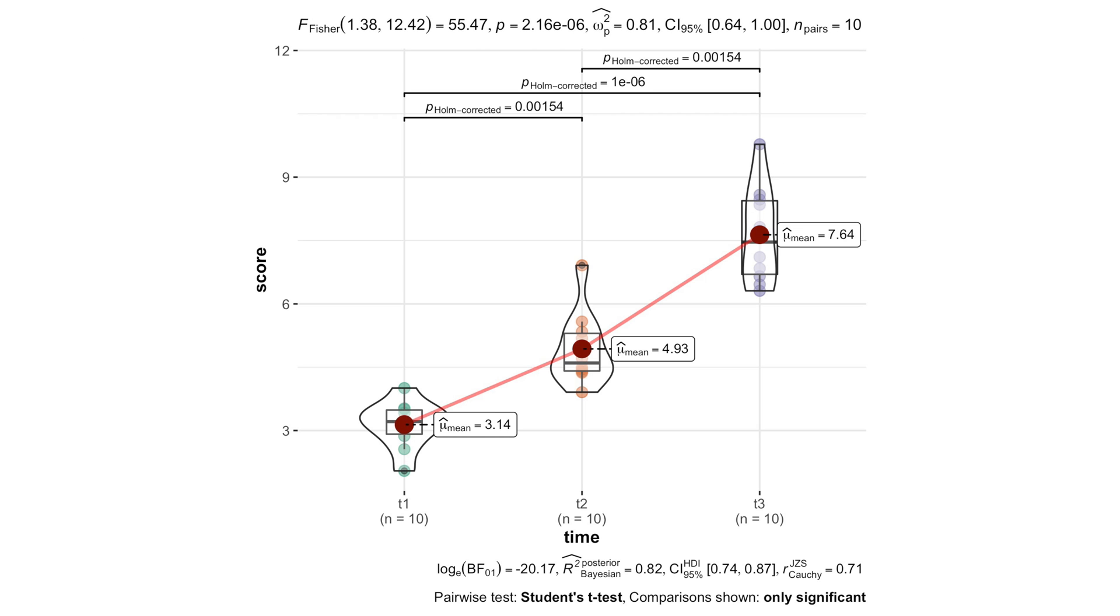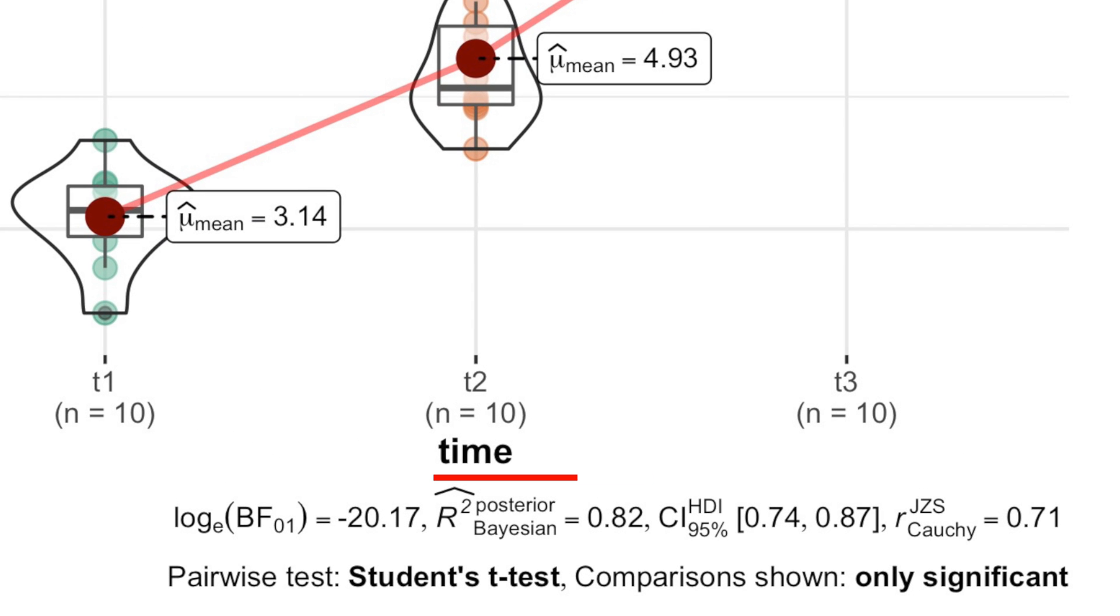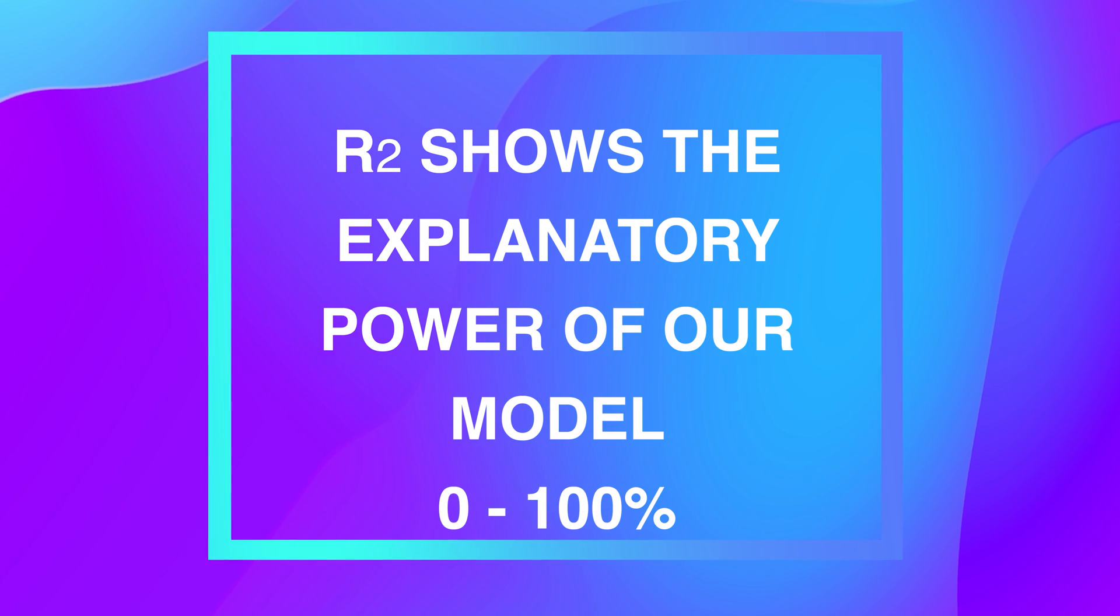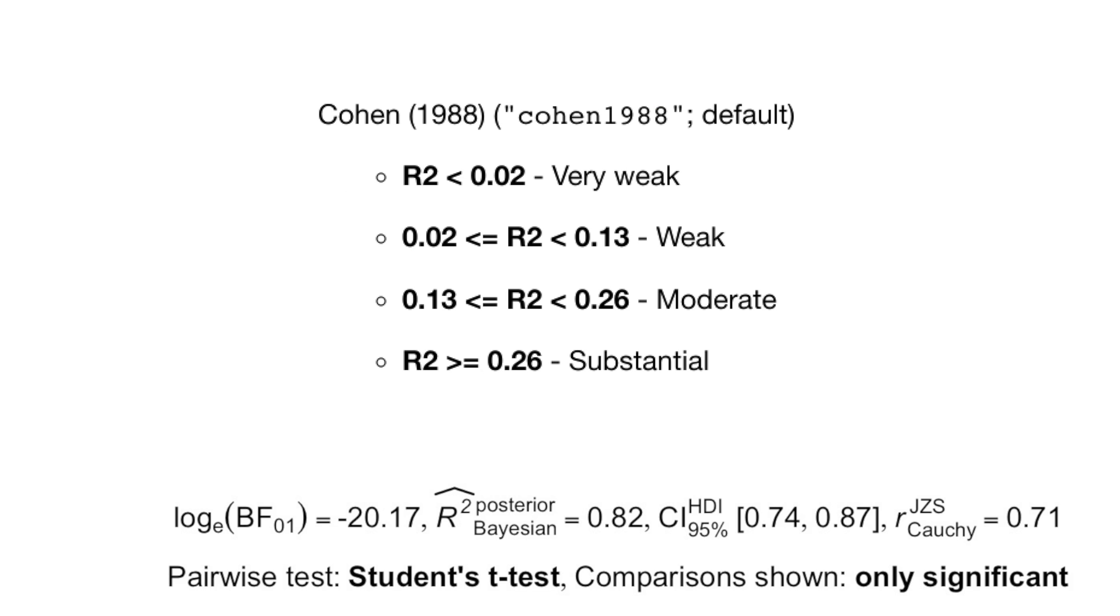Moreover, ggwithinstats also provides a Bayesian effect size, namely the coefficient of determination R-squared, with 95% highest density intervals. R-squared shows the explanatory power of our model, and since R-squared goes from 0 to 100%, the explanatory power of 82% in our model is huge. Or, if we interpret R-squared as the effect size, our effect is substantial.